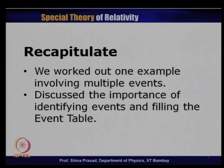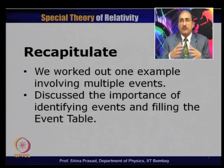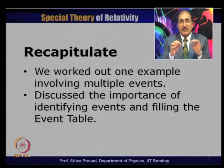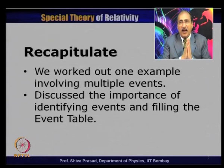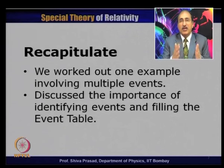In our last lecture, we had worked out a long example. The idea was to give you some feeling of how multiple-event problems have to be solved. We discussed specifically the importance of identifying the events and filling the event table. In most relativity problems involving kinematics, it is important to realize what the events are, write the coordinates of these events including time, and fill the event table. If information is not available in a given frame but in a different frame, that information has to be translated back using an appropriate transformation.